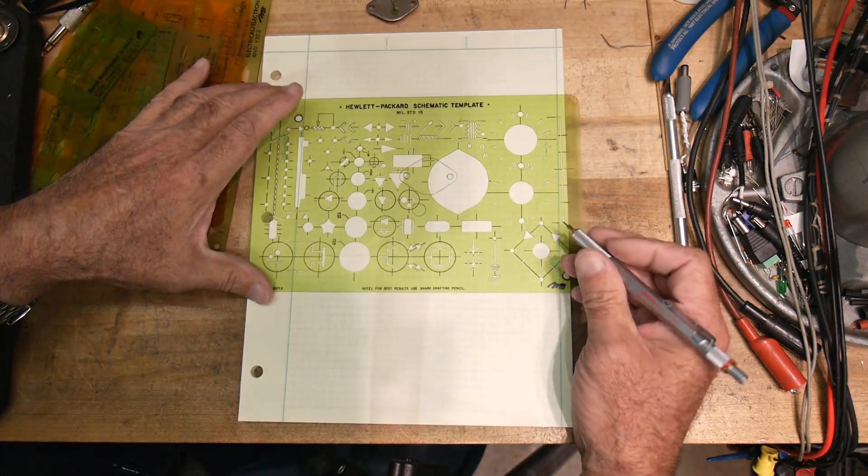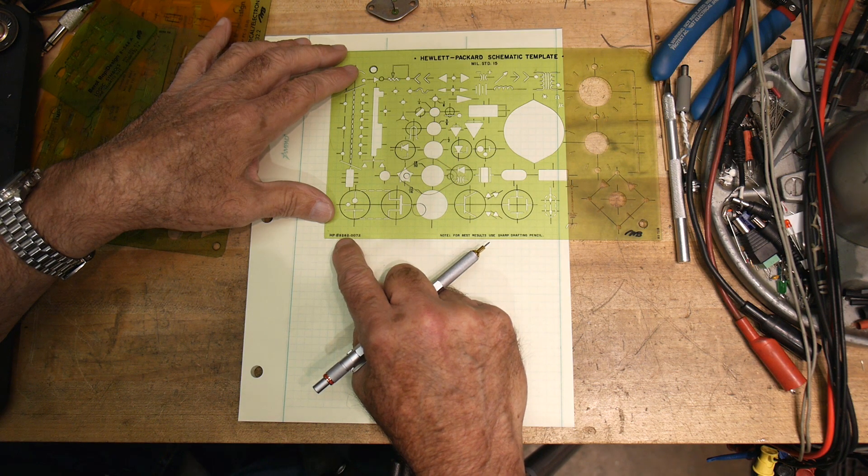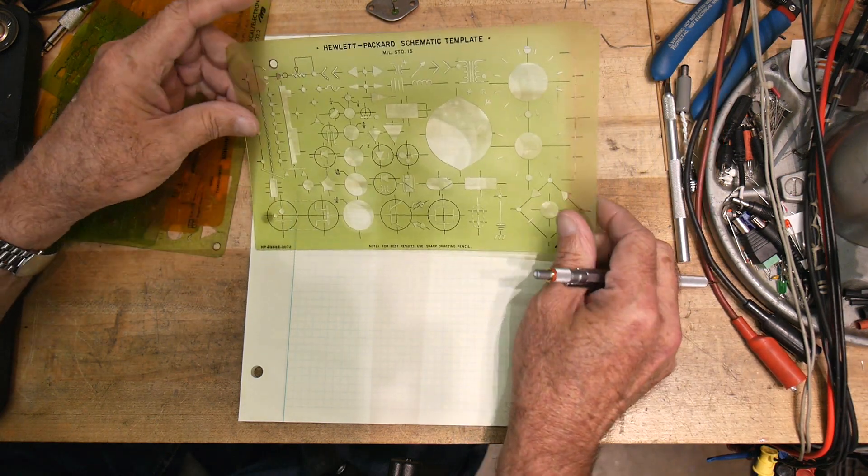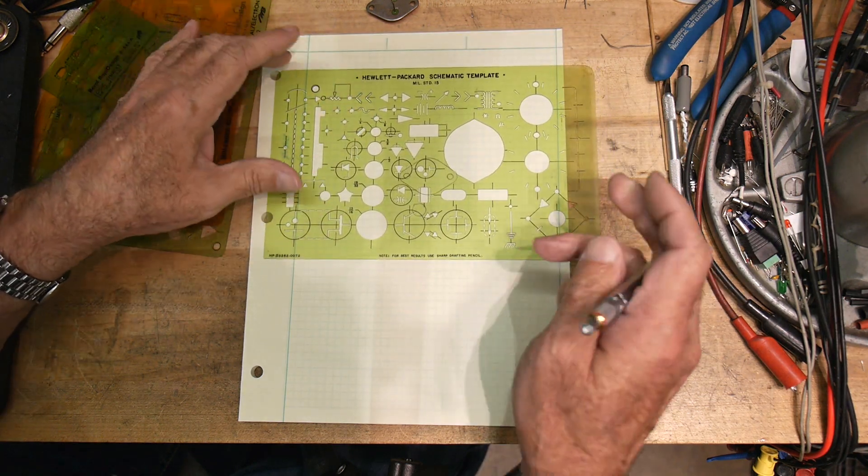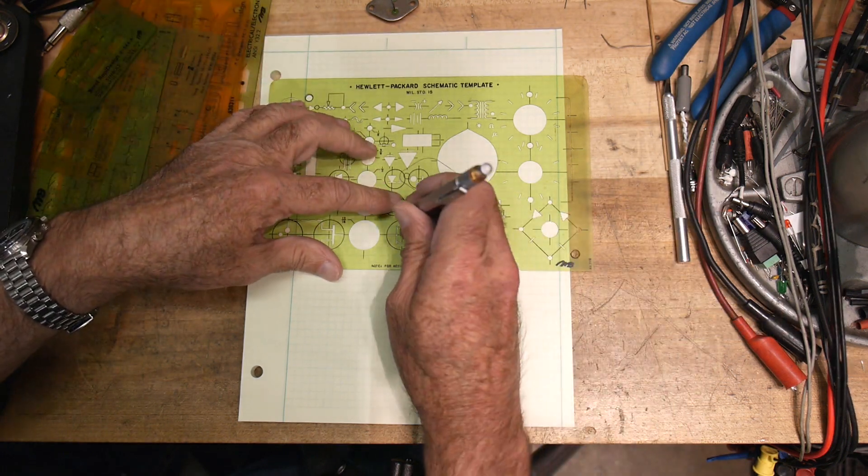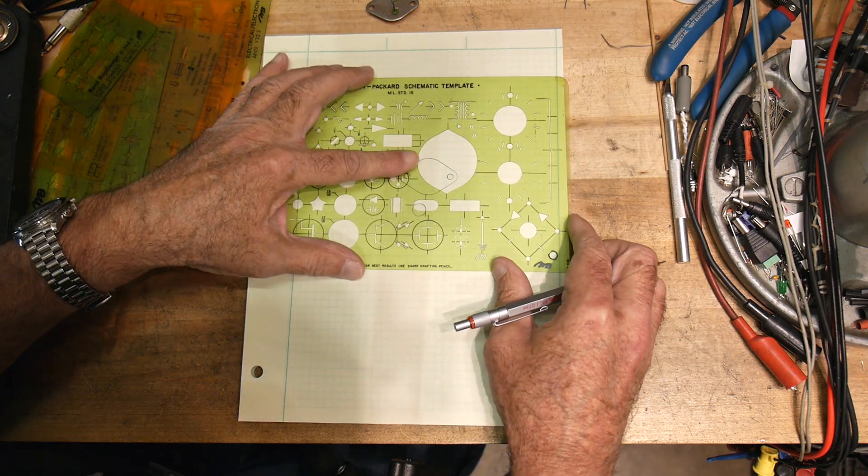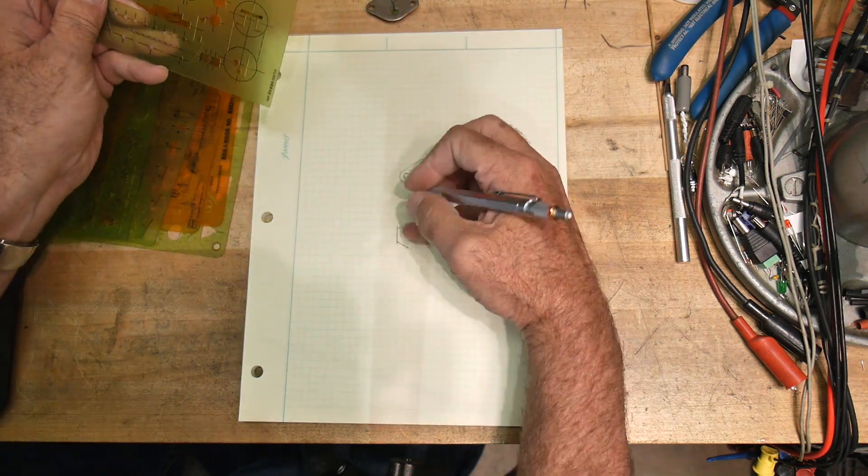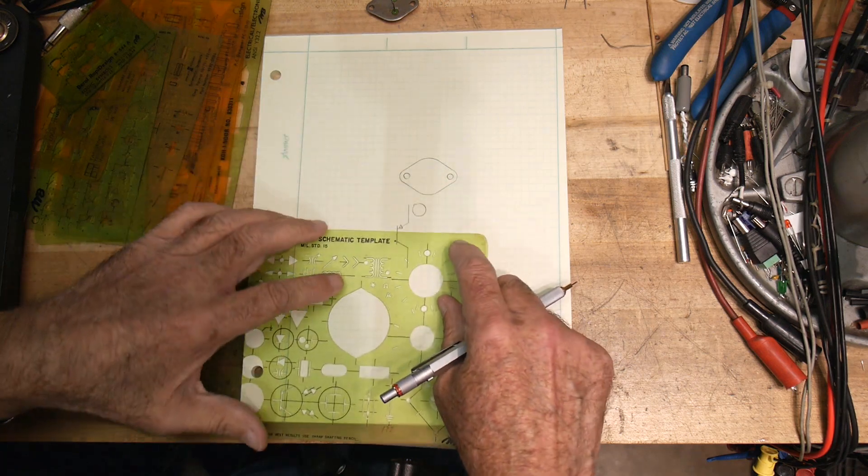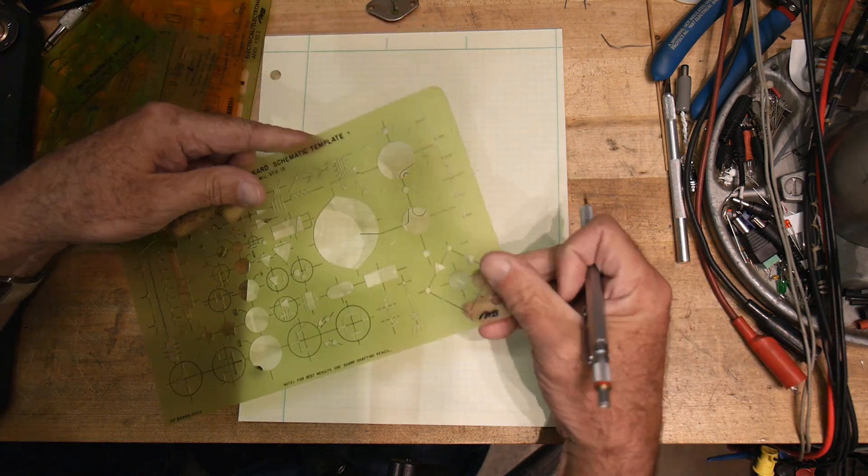Next one here. Now this one's interesting. This one says Hewlett Packard on it, and it actually has an HP part number—9282-0072. So you could go down to the stockroom and actually request this. This is something that all HP engineers would have access to. Now this is a MIL standard 15. So there is a standard for drawings. I think this is the one-to-one template. There's one-to-one templates, half-size, quarter-size, stuff like that. This one has a nice big transistor on it. These are pretty big. So schematics were very large.